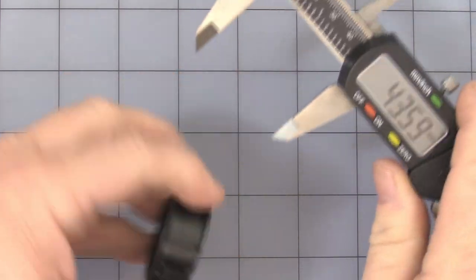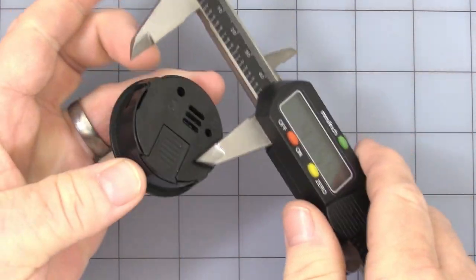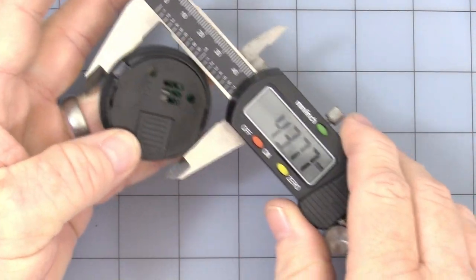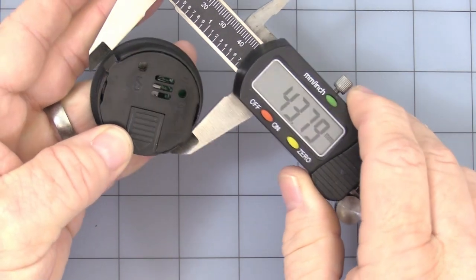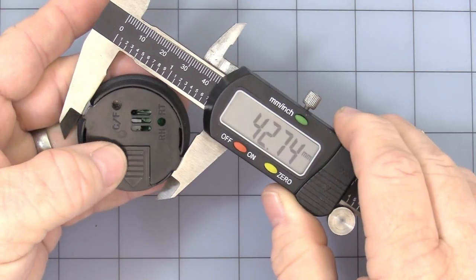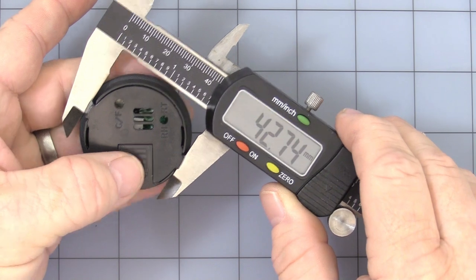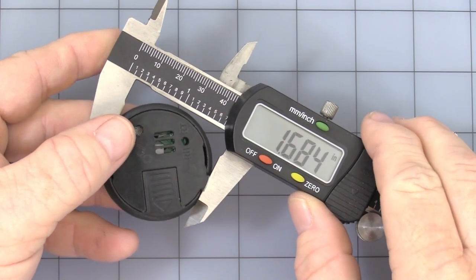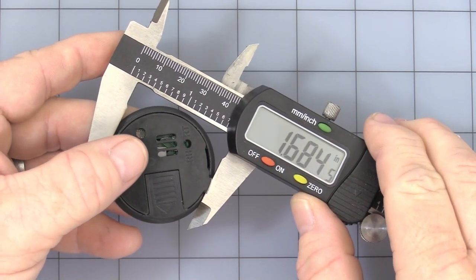It mounts in about a 43 to 44 millimeter round cutout, which converts to about 1.68 inches.